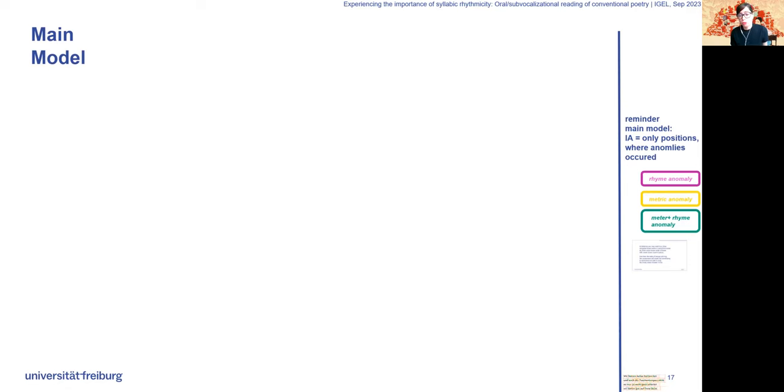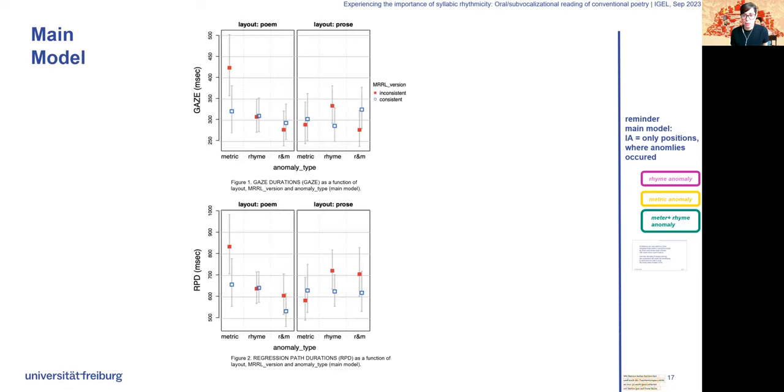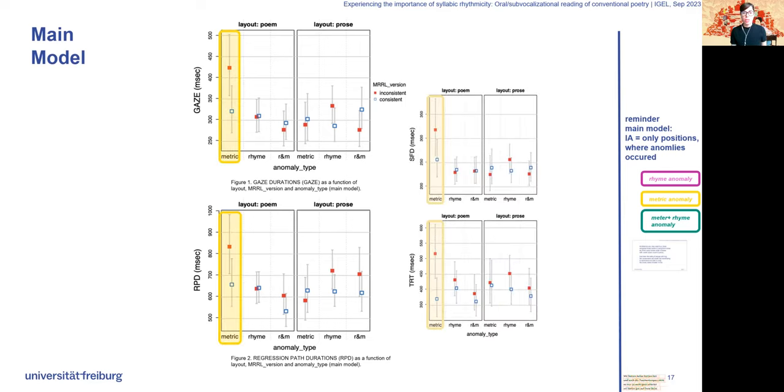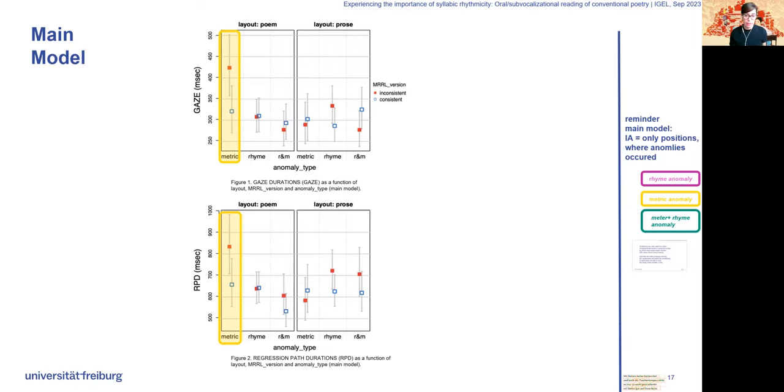Results for the main model show a fairly similar pattern for all four eye tracking measures. Fixation and reaction times for the metric anomalies were elevated in the poem layout, as you can see, which seems to be mandatory to detect them. Readers seem to dwell on the word itself to resolve the rhythmic disruption when their expectation is not fulfilled.